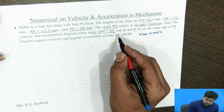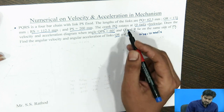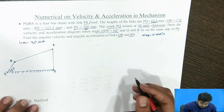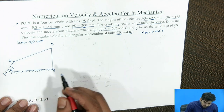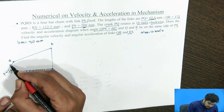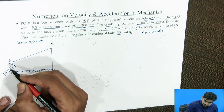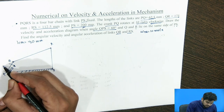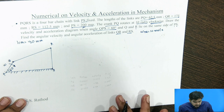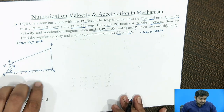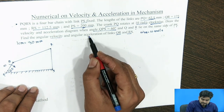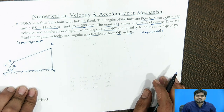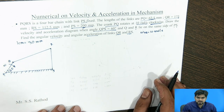Find the angular velocity and angular acceleration of links QR and RS. As per the given data, we can draw the space diagram with PQ rotating in the clockwise direction at 10 radian per second. To find the angular velocity and angular acceleration, we need to draw both the velocity diagram and the acceleration diagram.